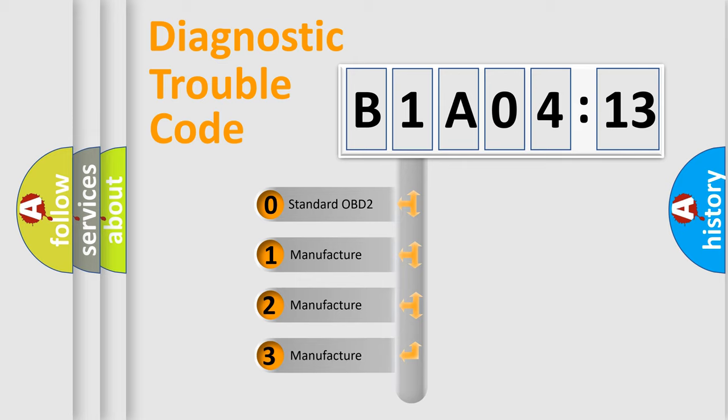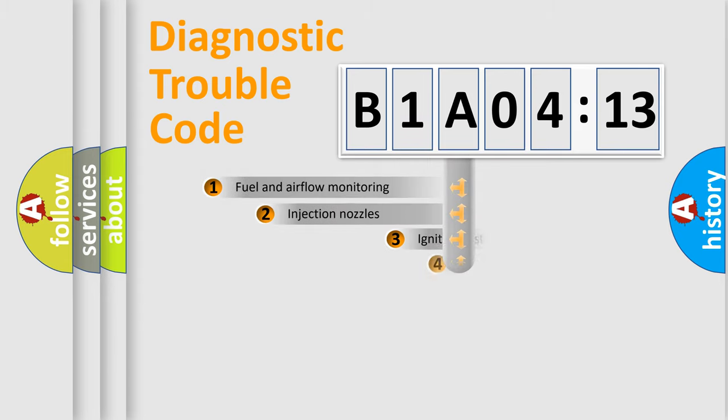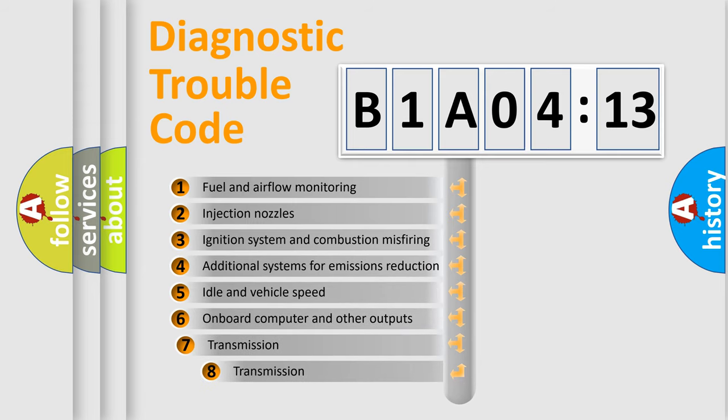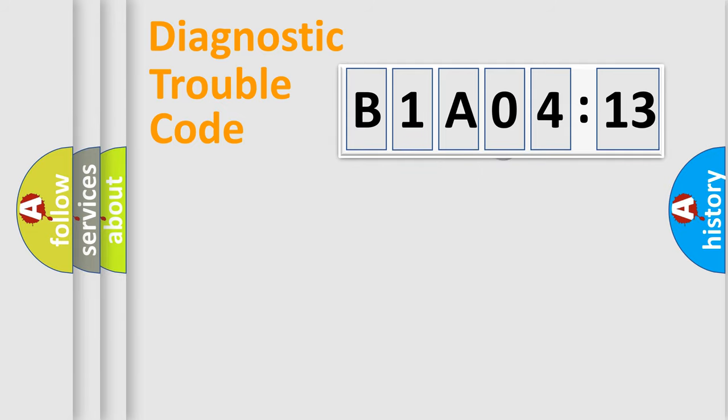If the second character is expressed as zero, it is a standardized error. In the case of numbers 1, 2, or 3, it is a manufacturer-specific expression of the car-specific error. The third character specifies a subset of errors. The distribution shown is valid only for the standardized DTC code. Only the last two characters define the specific fault of the group.